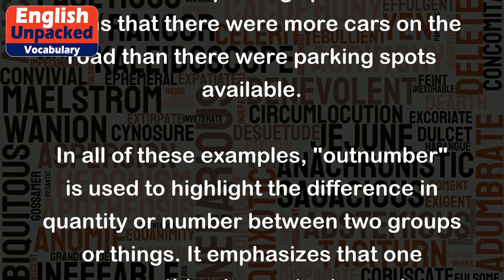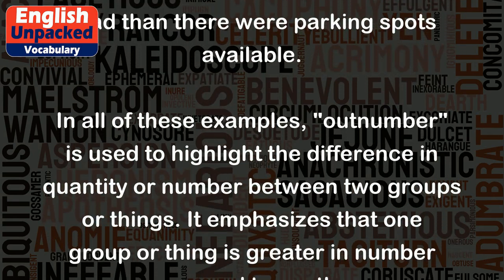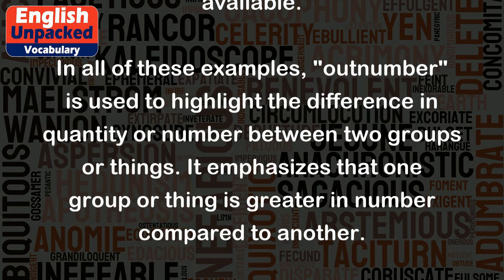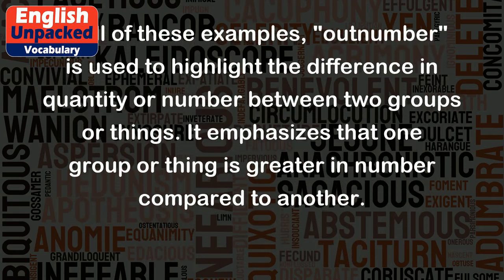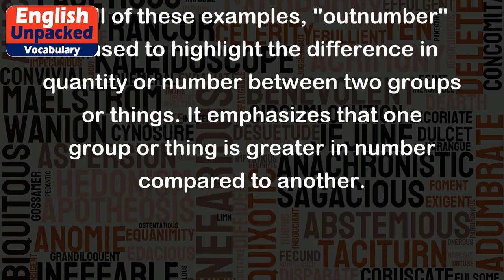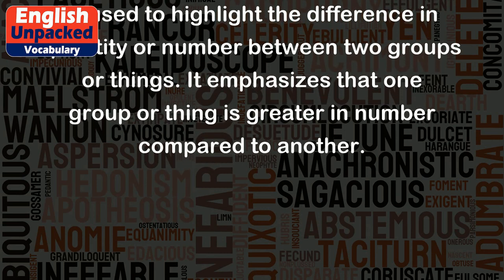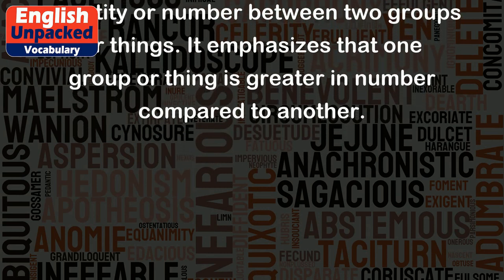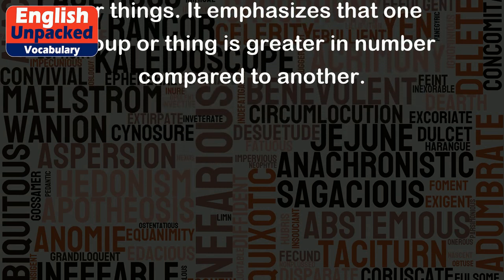In all of these examples, outnumber is used to highlight the difference in quantity or number between two groups or things. It emphasizes that one group or thing is greater in number compared to another.